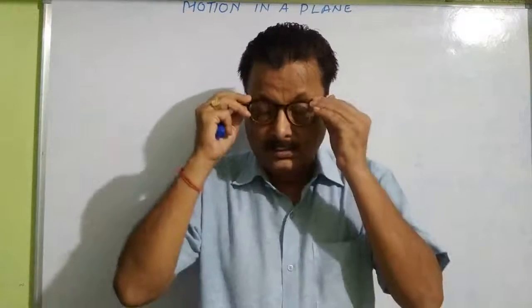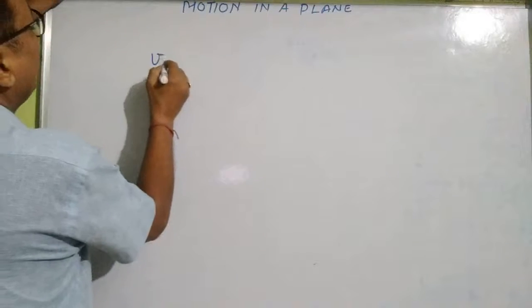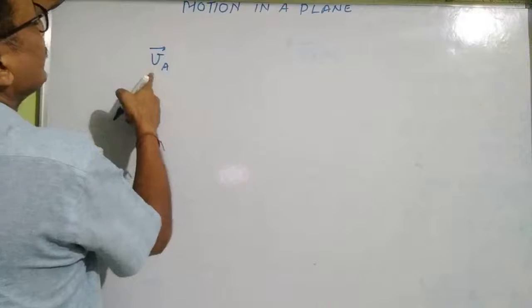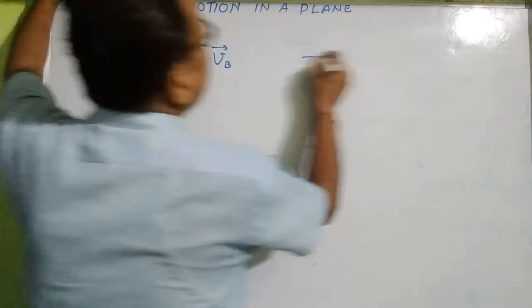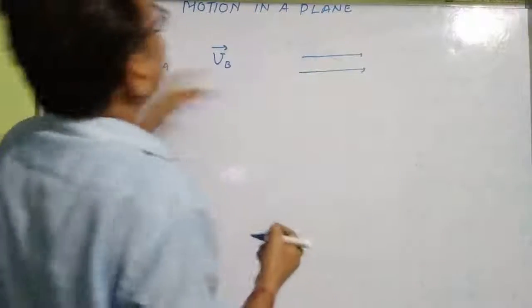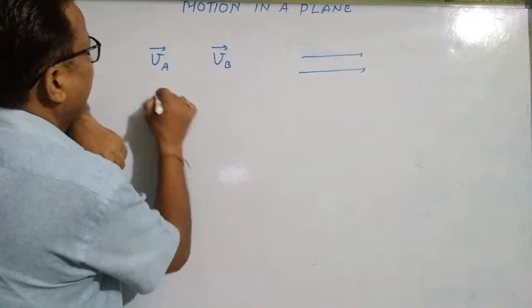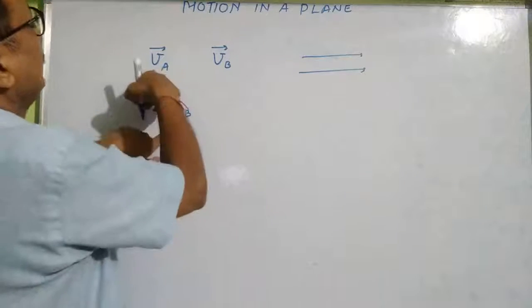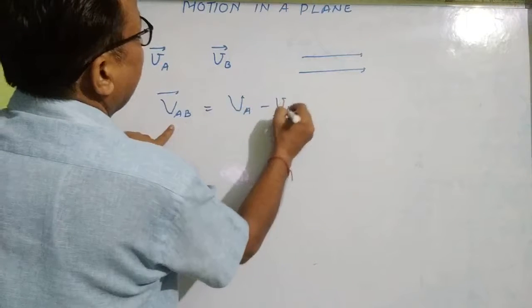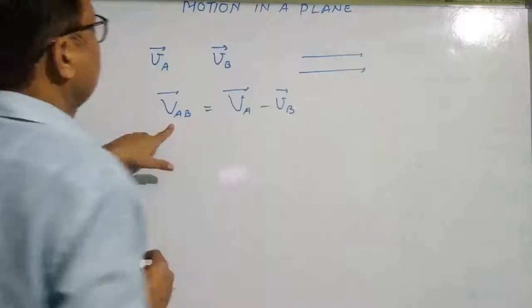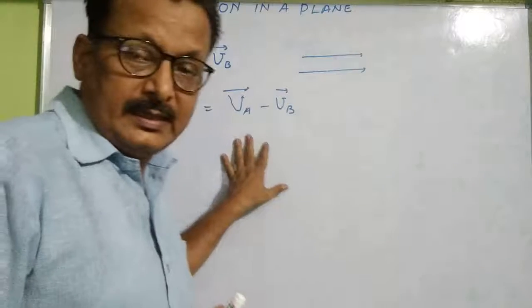Students, in motion in one dimension, you got the information that if any object A is moving with velocity VA, and object B is moving with velocity VB in a straight line, then VAB — the relative velocity of A with respect to B — was VA minus VB, and this depended on the direction.